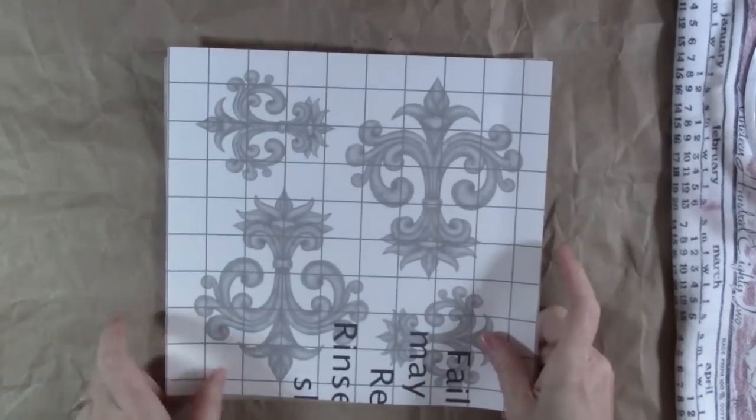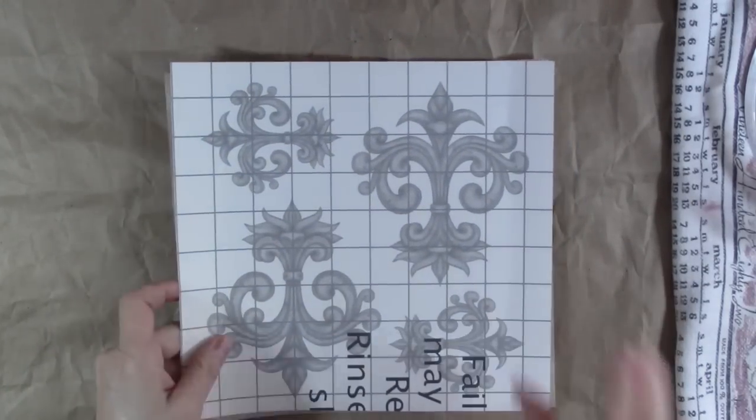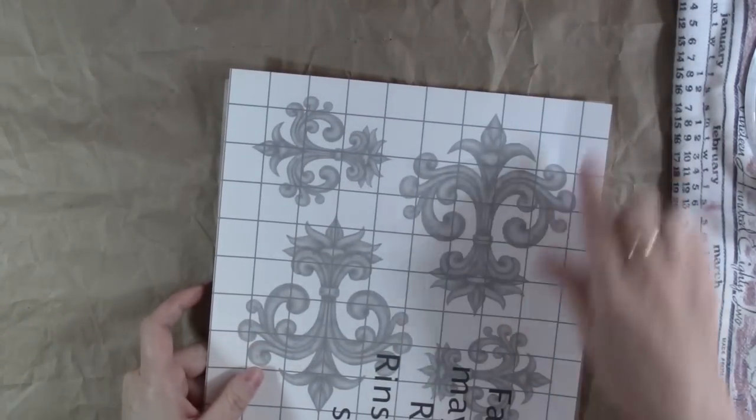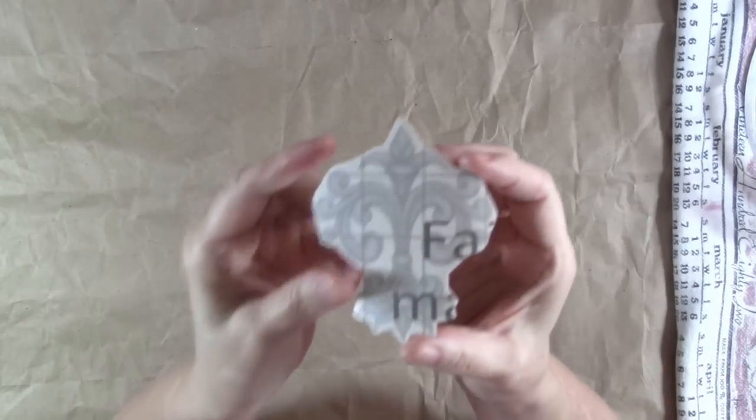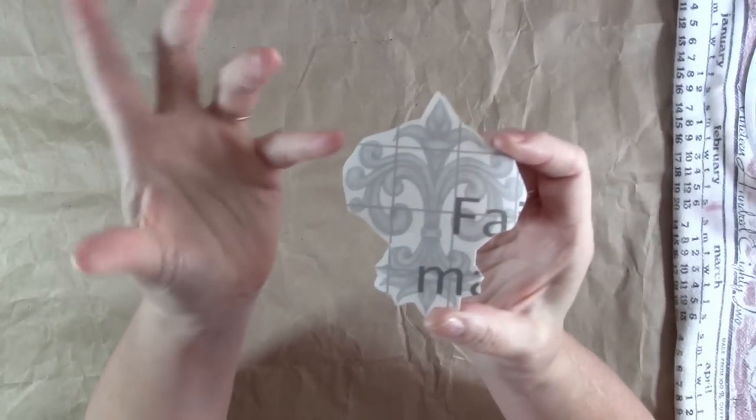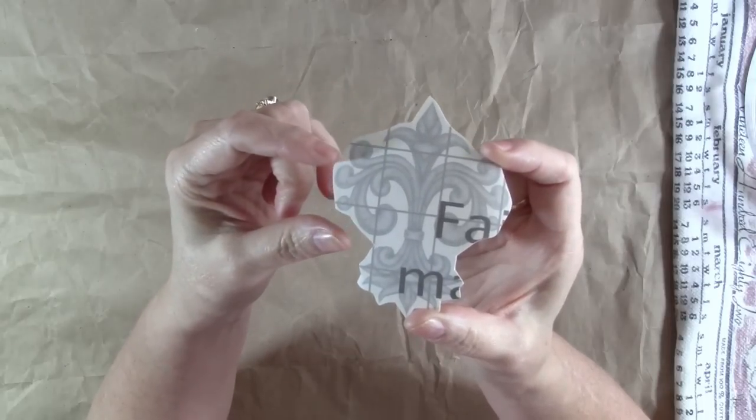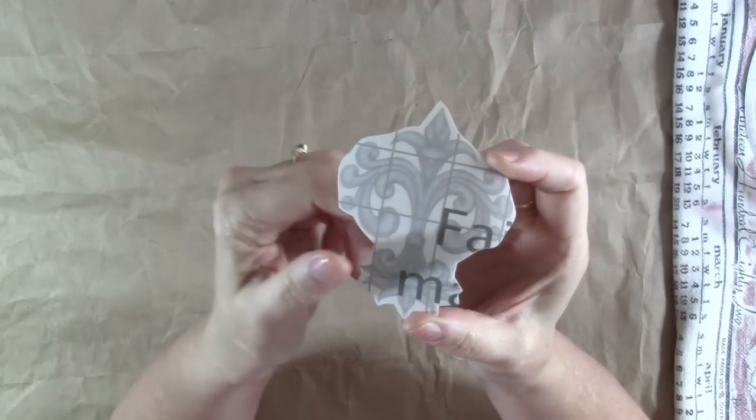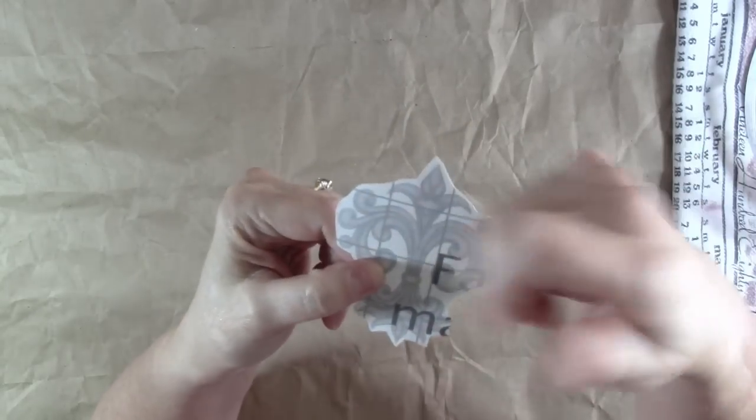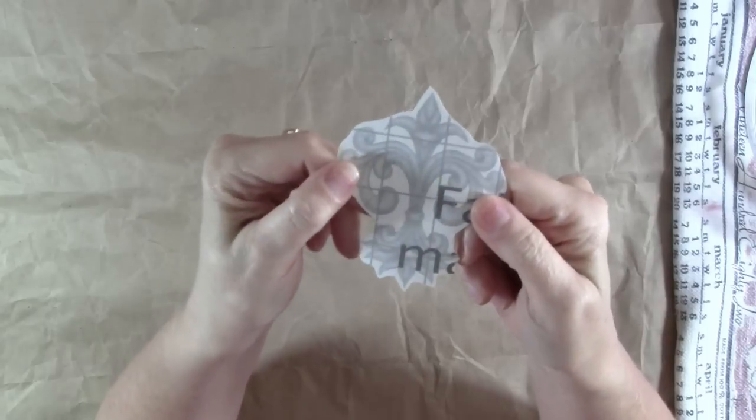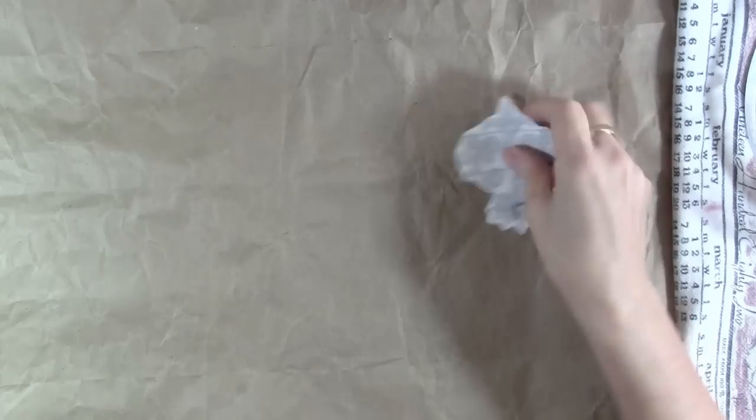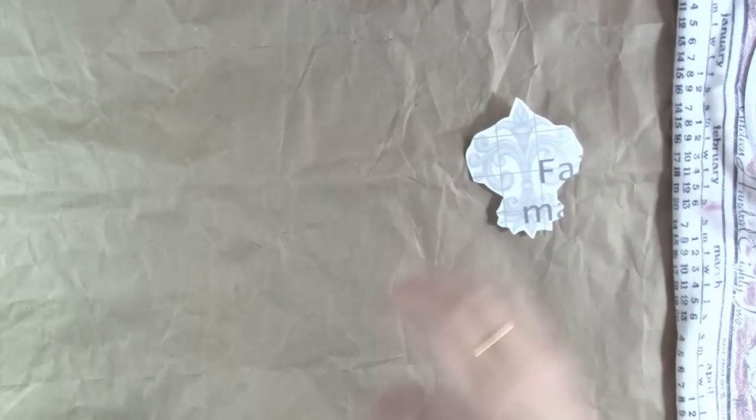What you're going to do is cut out the one that you want. You can fussy cut it if you want, but I don't usually bother. I just leave a little bit of a border around it, that lazy fussy cutting, just quickly cut it out. And then I'll show you how to put it on some vinyl.